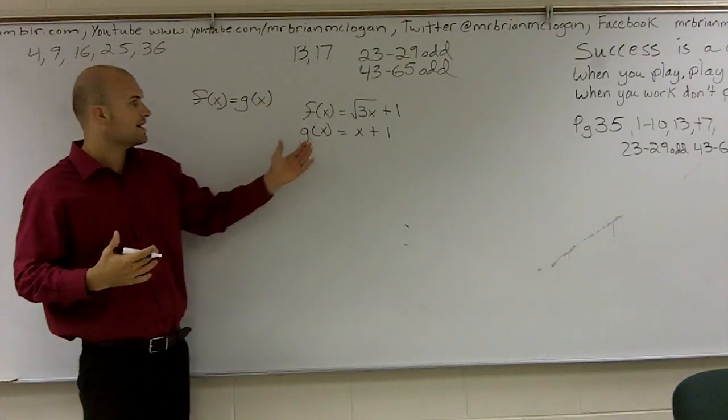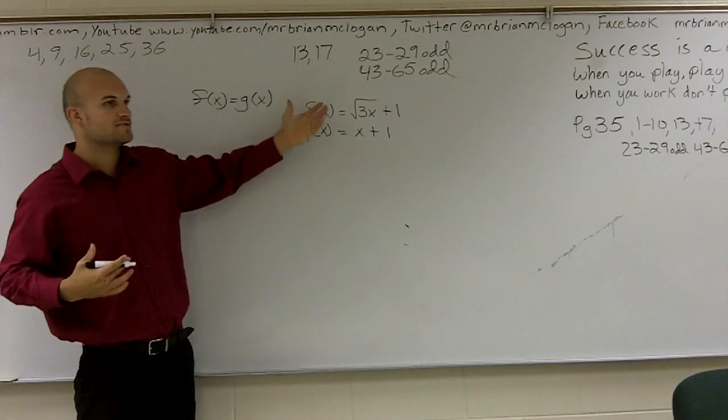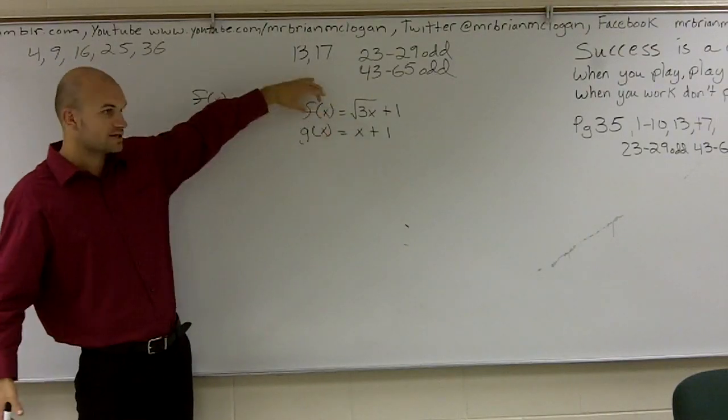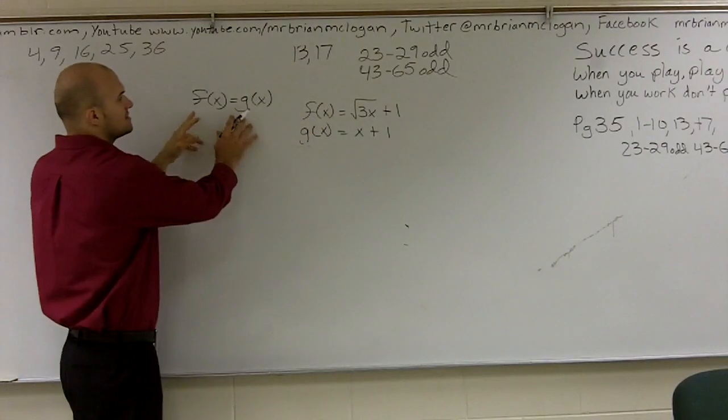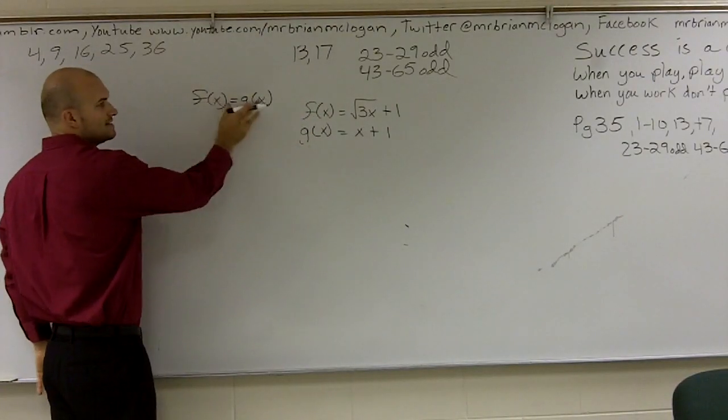So before we've looked at when we find the value of x when f of x equals 0. So what we did was we put a 0 in for the f of x and then solve for x. Well now we're given this constraint where we want f of x to equal g of x.